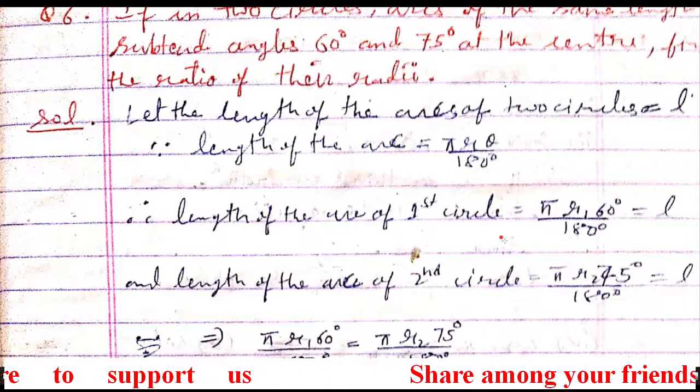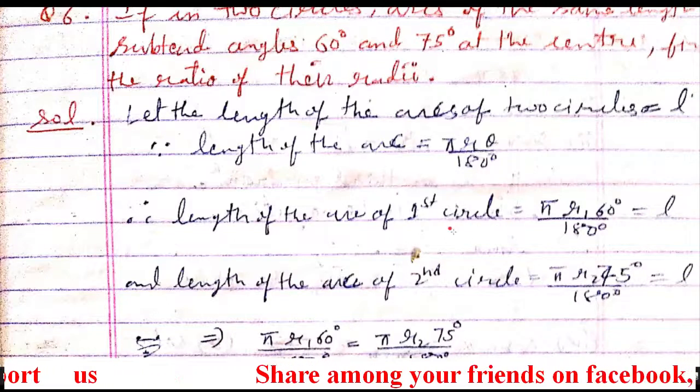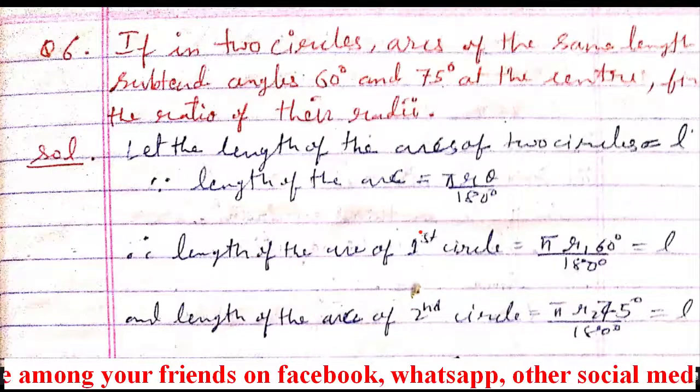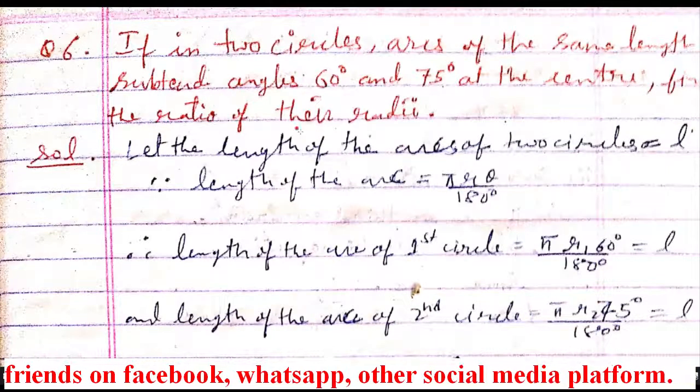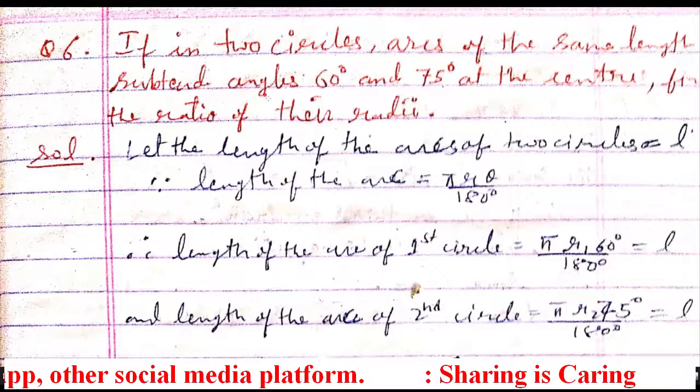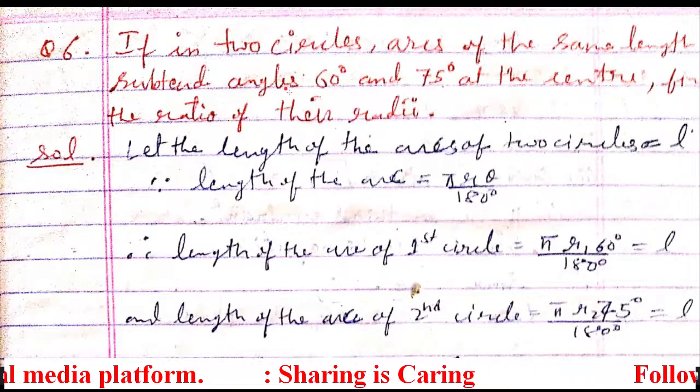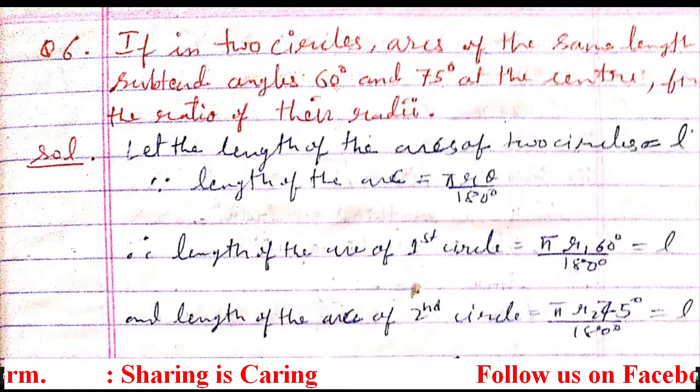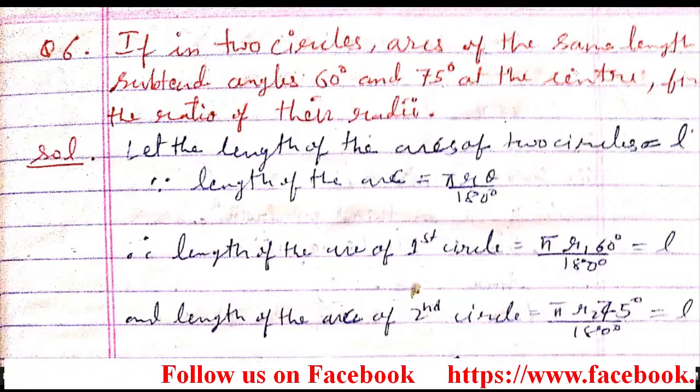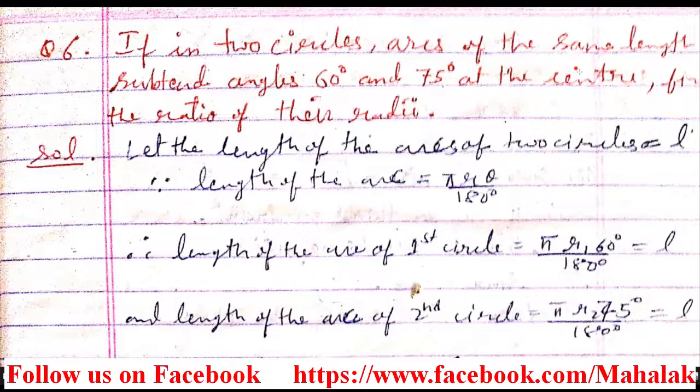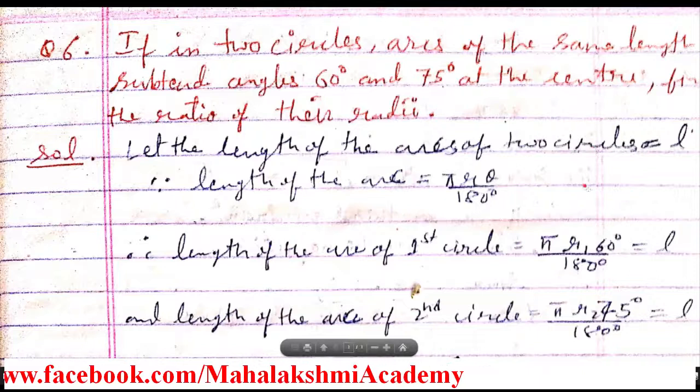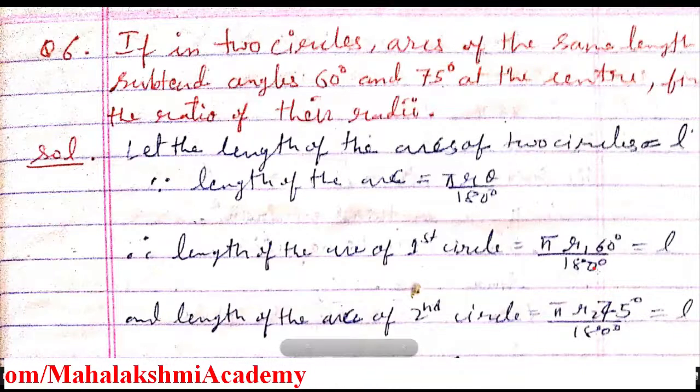For that, what we have done is we calculated the length of arc of first circle and length of arc of the second circle, because here it is given that same length of arc subtends. Means in two circles, whatever be the angle 60 degree and 75 degree, they subtend the same length of arc. That is why we need the formula for length of arc, which is πrθ/180.